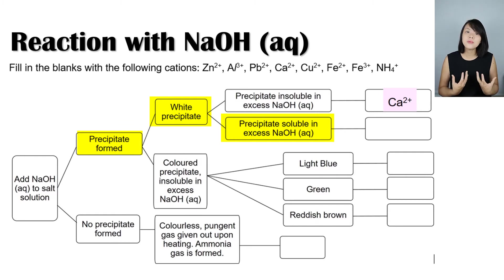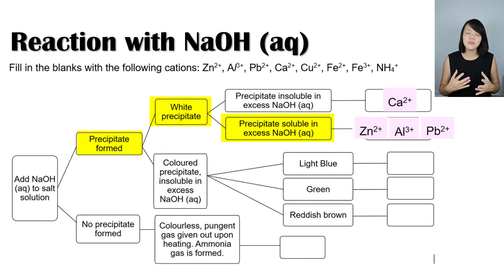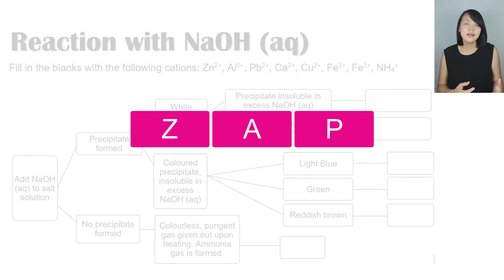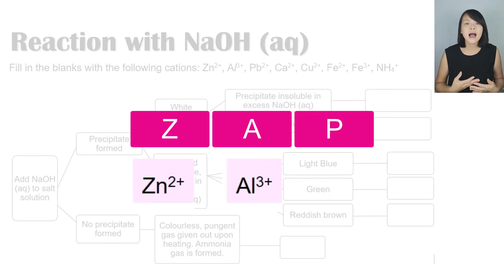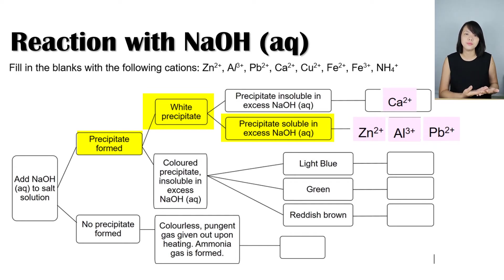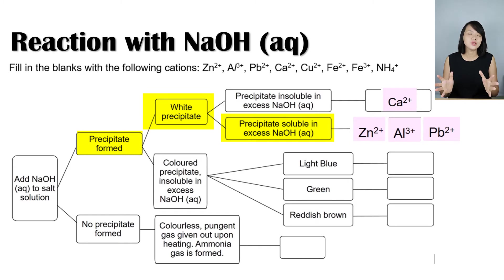If the white precipitate dissolves in excess sodium hydroxide, the possible cations present are zinc, aluminium, and lead(II) ions. For easy memory, remember this as 'ZAP' — Zinc, Aluminium, and lead(II). To narrow down which of these three ions is present, we can further test with aqueous ammonia.